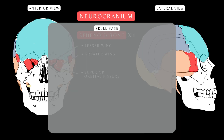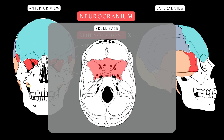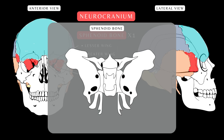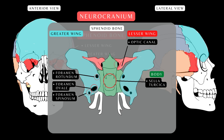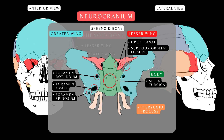Here is a diagram of the sphenoid bone embedded in the base of the skull. The isolated sphenoid bone looks somewhat like a butterfly. The greater wing has three important foramina: the foramen rotundum, the foramen ovale, and the foramen spinosum. Centrally located in the body of the sphenoid bone is the sella turcica, a depression in the bone where the pituitary gland sits. Superiorly is the lesser wing — the optic canal passes through this part and is occupied by the second cranial nerve, the optic nerve. The space between the lesser and greater wing is the superior orbital fissure. Inferior to the body is the pterygoid process, with its two parts: the medial and lateral pterygoid plates.